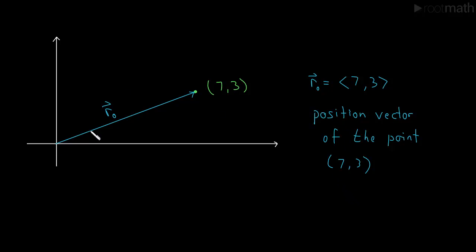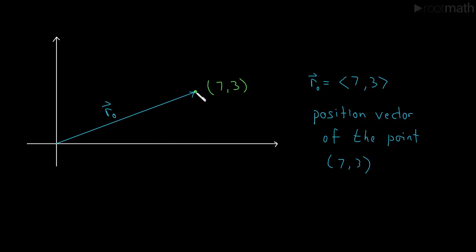So the difference between the point and the vector is one is a point and one is a vector, but they tell us essentially the same information. Because if we know the point, we can easily write down the vector — it's just the same numbers. And vice versa, if we have the vector and we start it at the origin, it will point right at the point with the same numbers. So we'll often switch back and forth between knowing a point and knowing a position vector — we'll use them basically interchangeably.